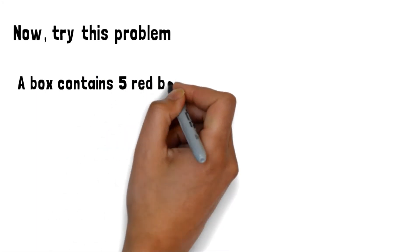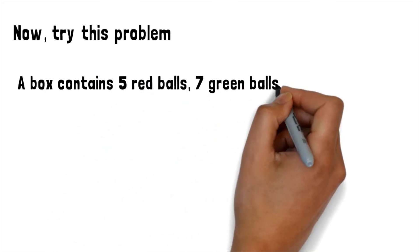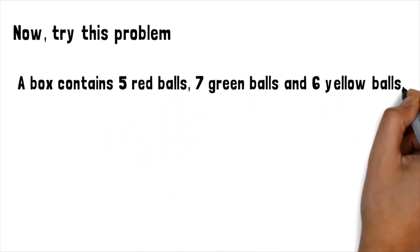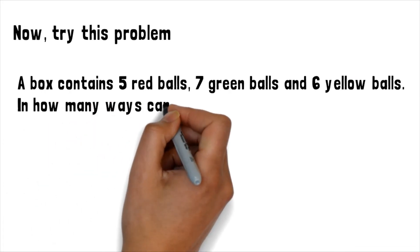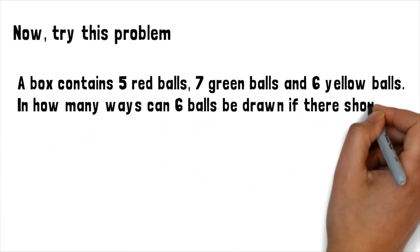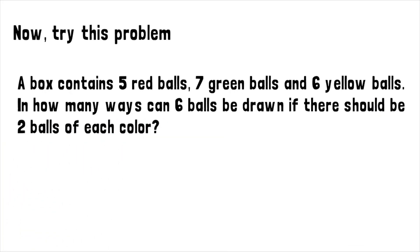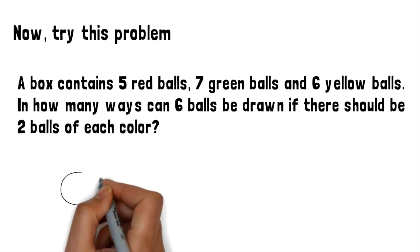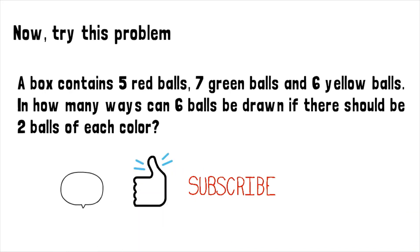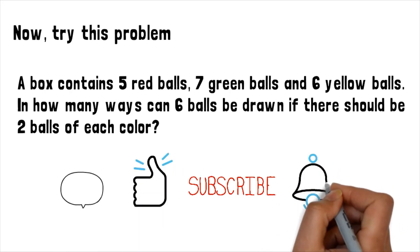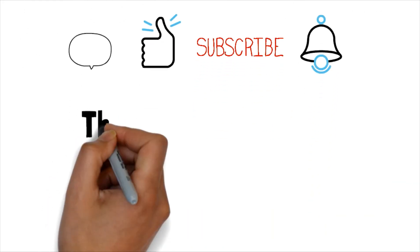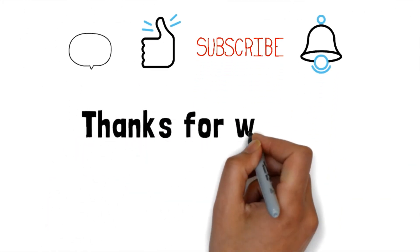Now try this problem: A box contains 5 red balls, 7 green balls, and 6 yellow balls. In how many ways can 6 balls be drawn if there should be 2 balls of each color? You can pause the video and answer the problem. Don't forget to leave a comment, give us a thumbs up, subscribe to our channel, and hit the notification bell so you'll be notified of our next update. That's all for today — thanks for watching.